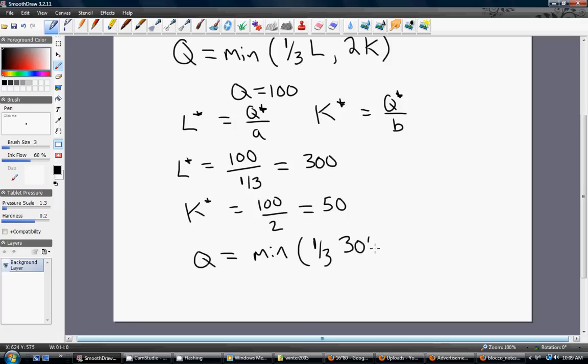If L is 300, put that in here. And if K is 50, we put that in here. So one-third of 300 is 100, and 2 times 50 is 100. So yes, this is the ideal way of producing 100 units of output, using 300 units of labor and 50 units of capital.